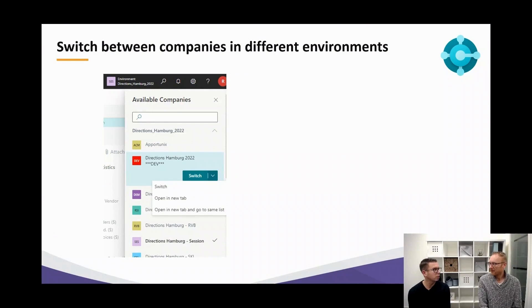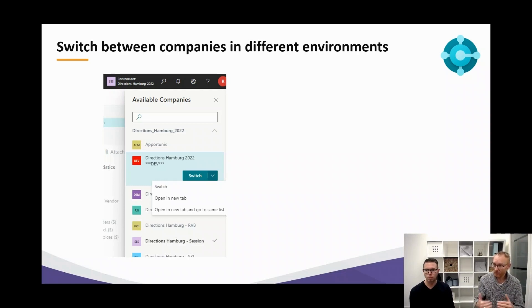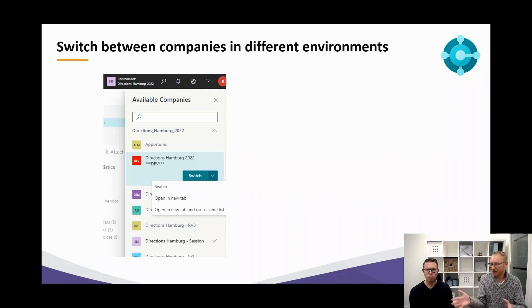Switch between companies in different environments. The old school users that have a history going back to the time of NAV know the shortcut key Control+O to switch between companies. Now we have something comparable in BC Online, and it's even improved. You can still switch between companies like you used to in NAV, but as you can see on this page, you have the ability to open a certain page in another company. So for instance, you're in the item overview and you see the stock there, and you want to see the stock in one of your other companies — you can open the same page with one click in the other company. That's very powerful.